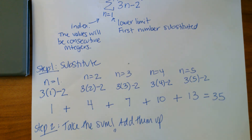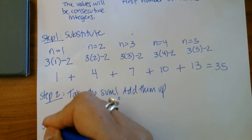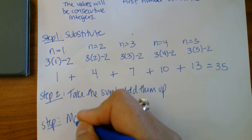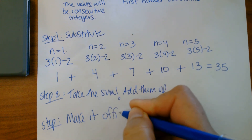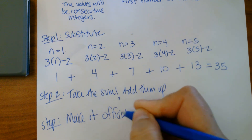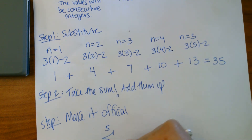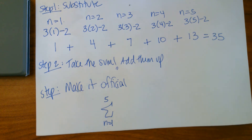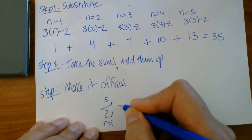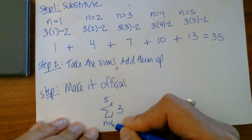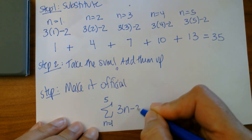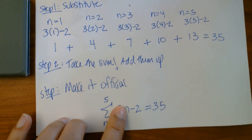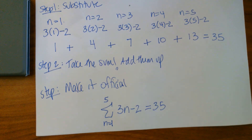And we're going to get thirty-five. So let's make it look official — that's step three: make it official, rewrite the actual problem. Rewrite the actual problem. And your sigma signs — it's practice, it really just takes practice. Sometimes mine are really good, sometimes they're really bad depending on how fast I'm writing. So we're going to do from one to five, sigma, three n minus two, equals thirty-five. I just rewrote the problem and then put down what it equals, and now this looks official.